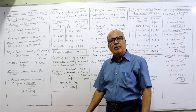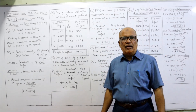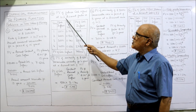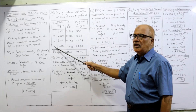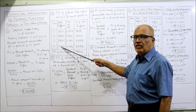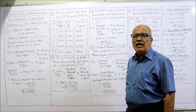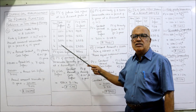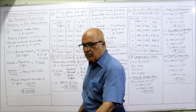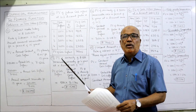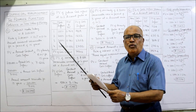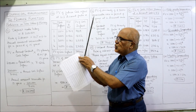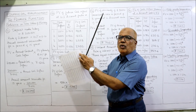The discounting factor is 10%. By making a table we can easily find the present value of future cash inflows. Years 1, 2, 3, 4 — with annual cash inflows as given. Now we need the PV factor at 10%, not the annuity factor but PV of rupee 1. So at 10%: year 1 is 0.909, year 2 is 0.826, year 3 is 0.751, year 4 is 0.683.